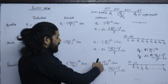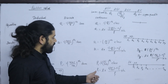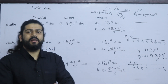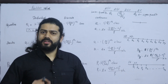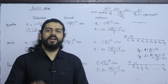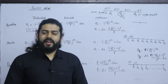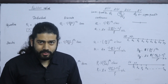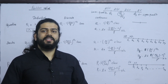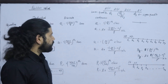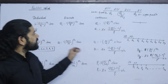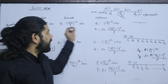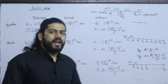For continuous data, P_i = L + (i·n/100 − CF) / F × H. The key difference: Quartile divides by 4 (n/4), Decile divides by 10 (n/10), and Percentile divides by 100 (n/100). Common questions involve the first quartile (lower quartile Q1), upper quartile (Q3), and specific percentiles like the 10th, 35th, 60th, 80th, or 90th.